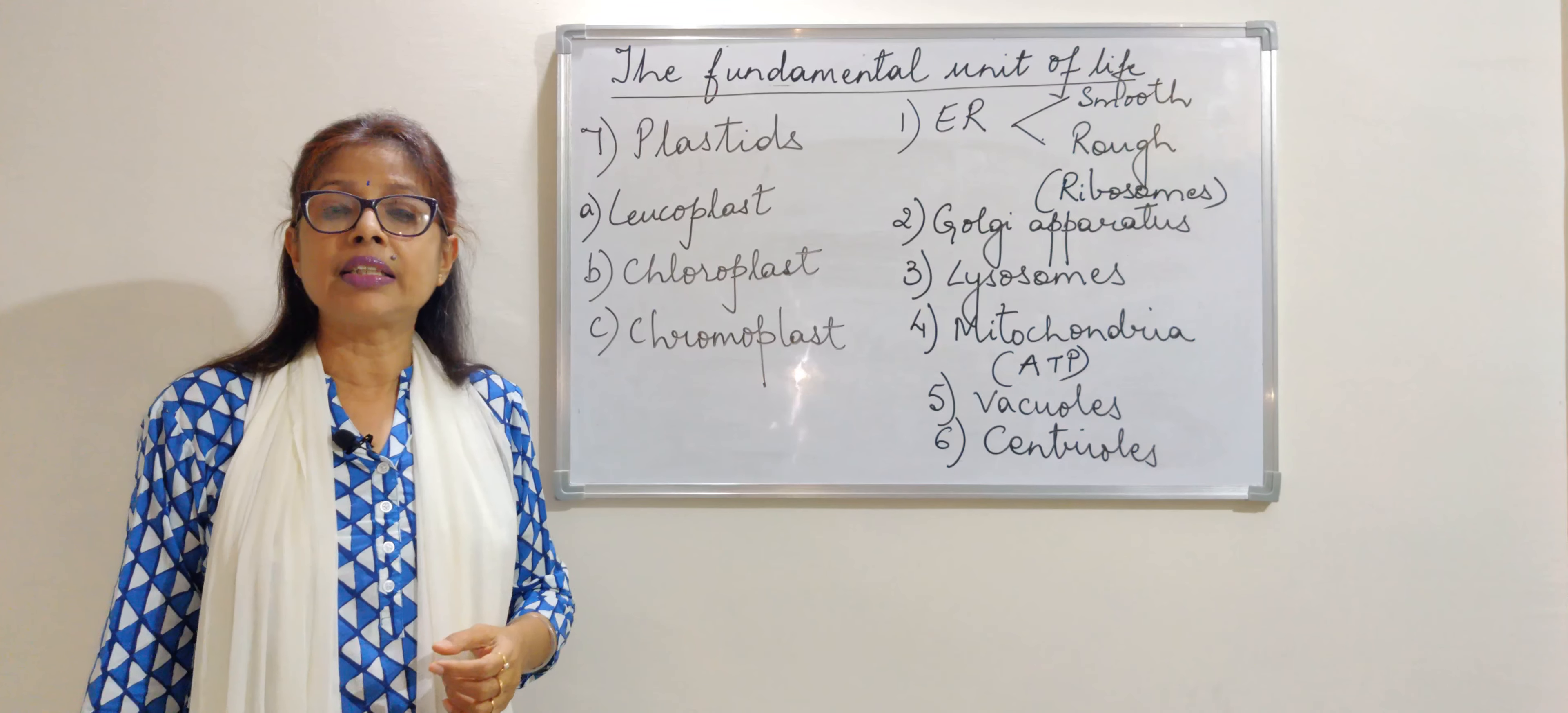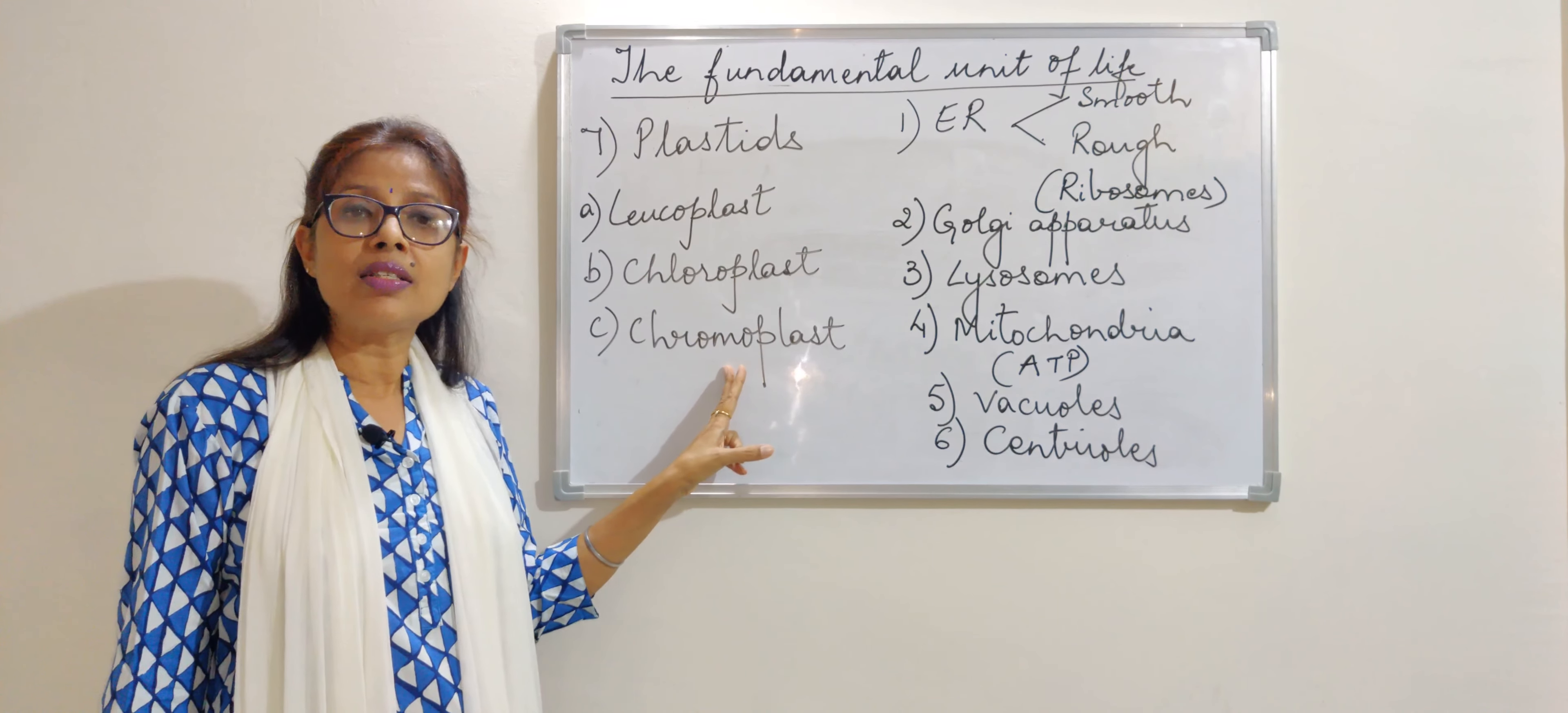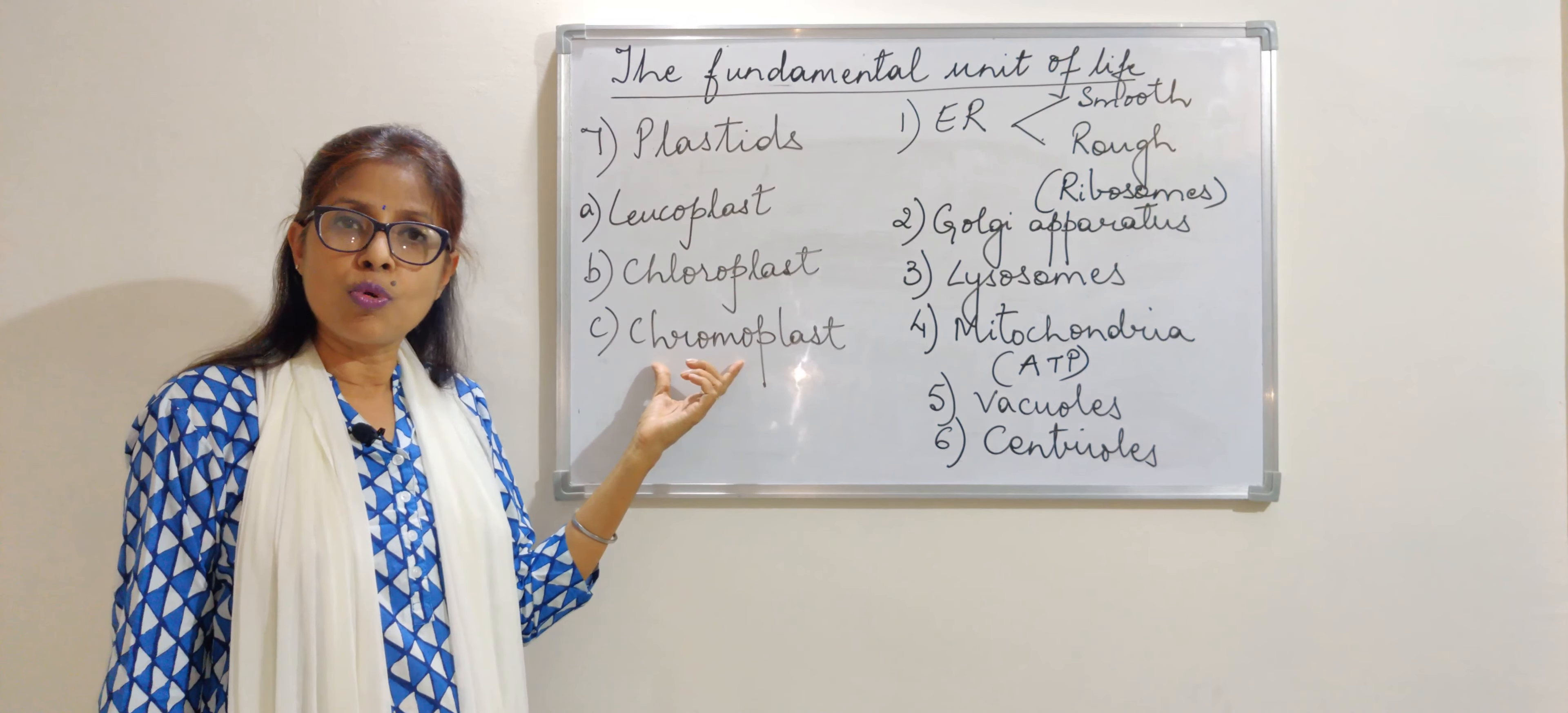The third one, that is the chromoplast, which is present in the flowers and fruits. The various colors of fruits or the flowers that you see, that is because of the presence of chromoplast.